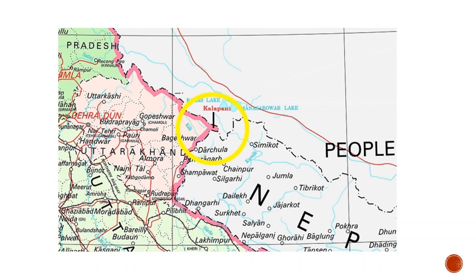This dispute is going on between India and Nepal over a region called Kalapani. Kalapani lies on the easternmost corner of Uttarakhand's Pithoragarh district, between India and Nepal. Both countries lay claim to Kalapani. The dispute was revived in November 2019 when India published a revised political map showing the newly created entities of Jammu & Kashmir and Ladakh, with Kalapani shown as part of Pithoragarh district. Nepal protested immediately.